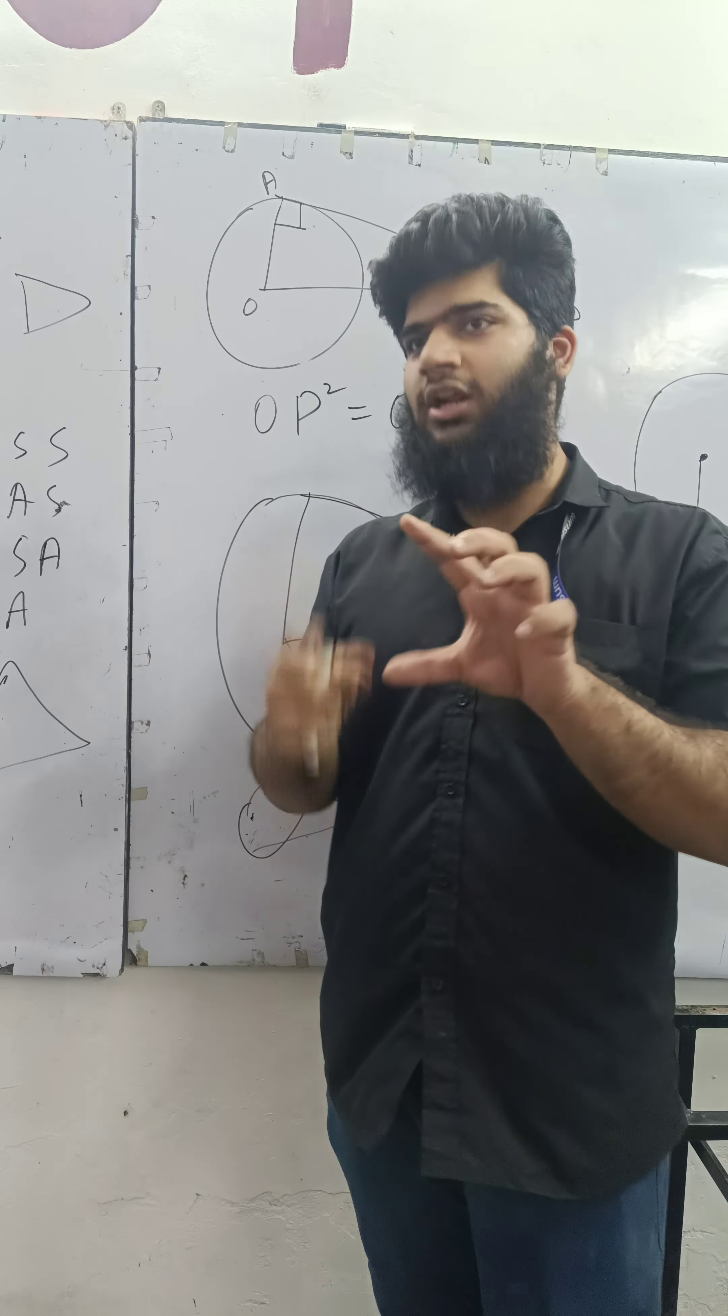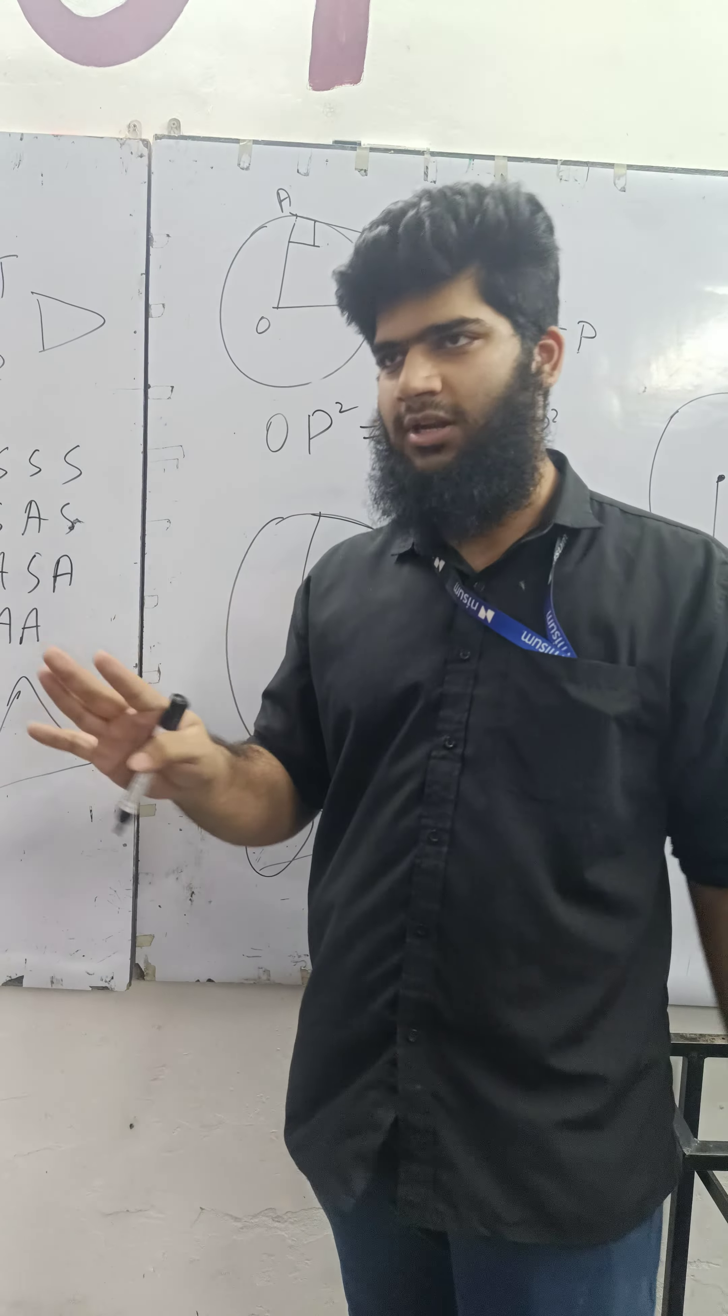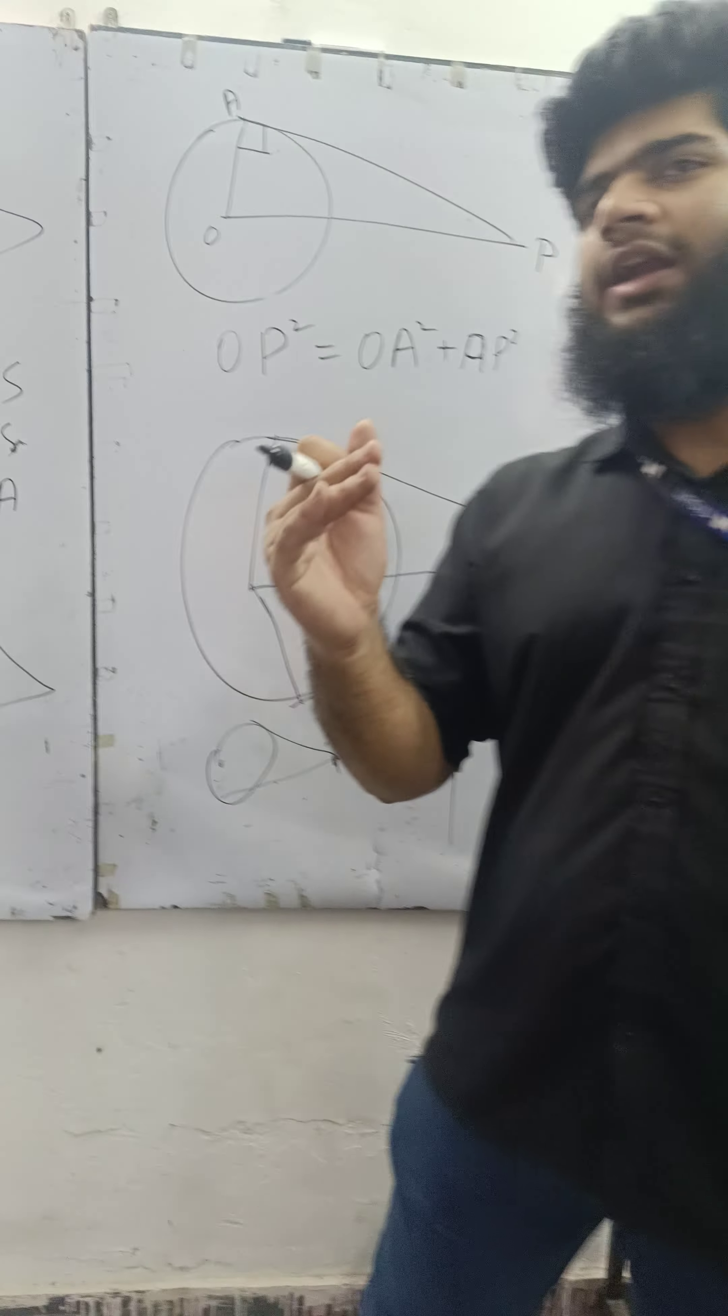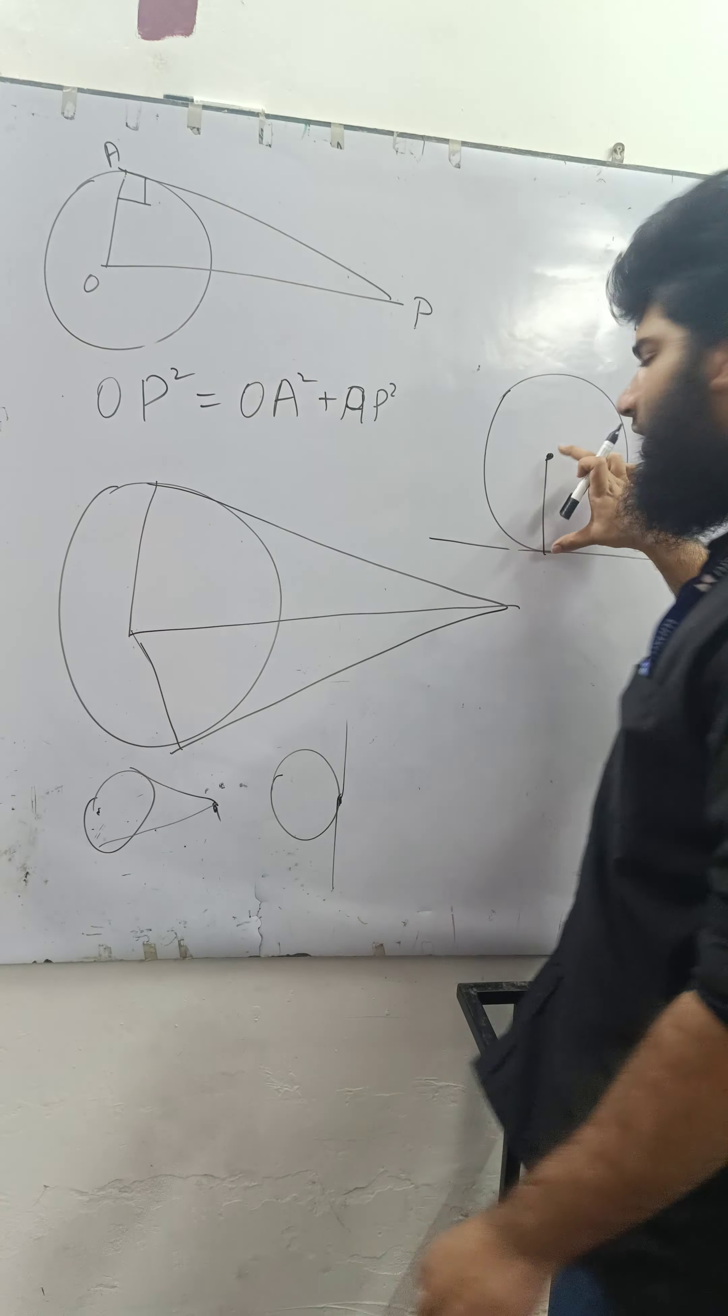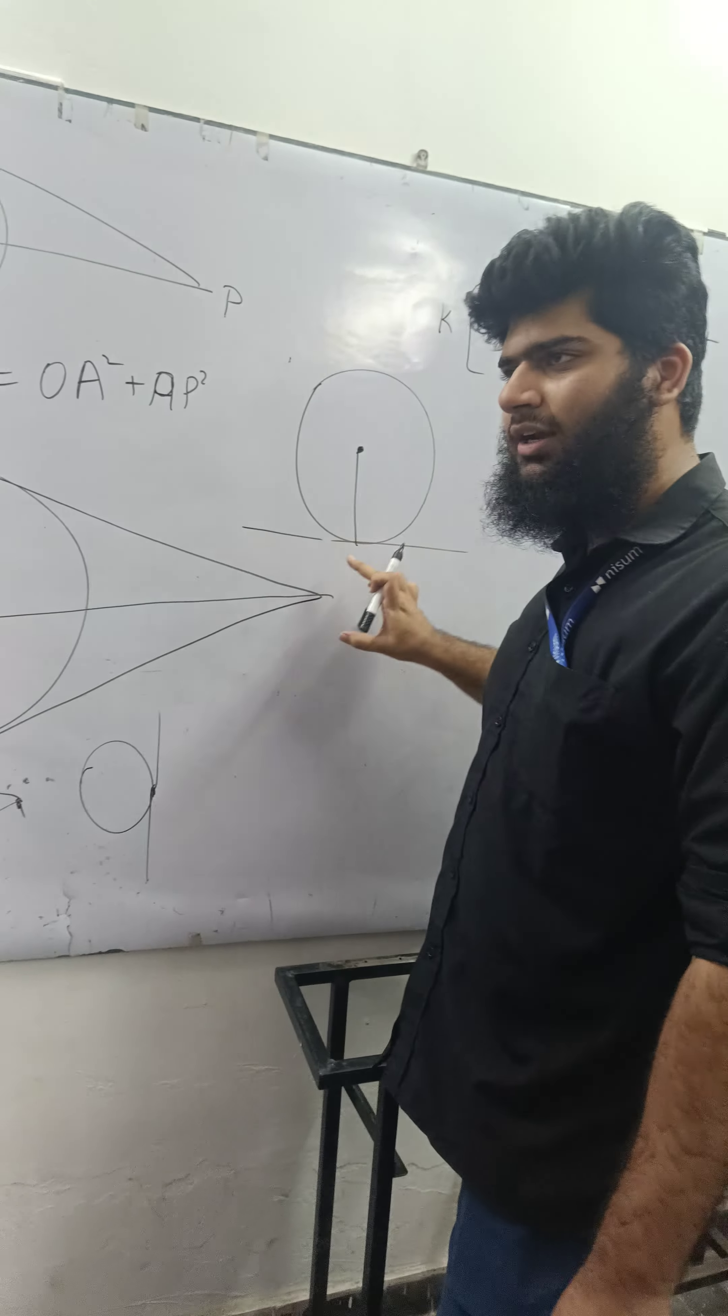If you want a tangent, if you want a point in circle, then you want a tangent. So, tangent and radius are always perpendicular. The shortest distance is radius and tangent.